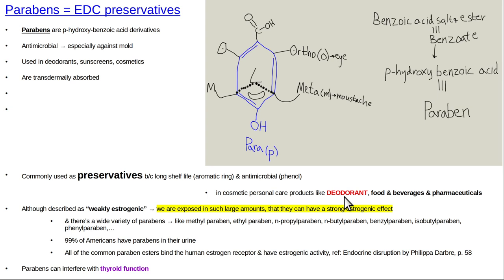Deodorant will typically have parabens as preservatives and also aluminum, which is a metalloestrogen — a chemical that increases estrogenic effects in the human body. Many products now advertise 'paraben free.' Parabens can also interfere with thyroid function, which is a problem with some estrogenic chemicals. Soy is a classic example — it is estrogenic and has an anti-thyroid effect.